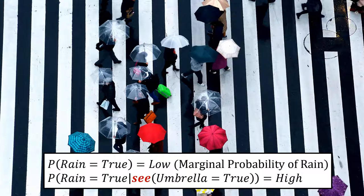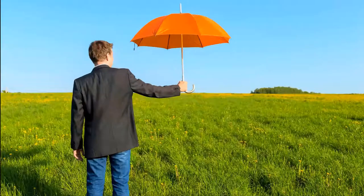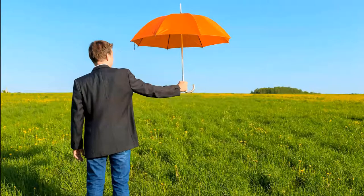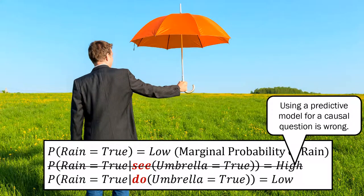That is very reasonable, and I think all of you will agree. Now if we change the setting and switch from seeing to doing — considering that the marginal probability of rain is still low — what happens if I open up an umbrella? Well, absolutely nothing. So using a predictive model here is entirely inappropriate. The correct causal model would say that opening an umbrella does not change the probability of rain.